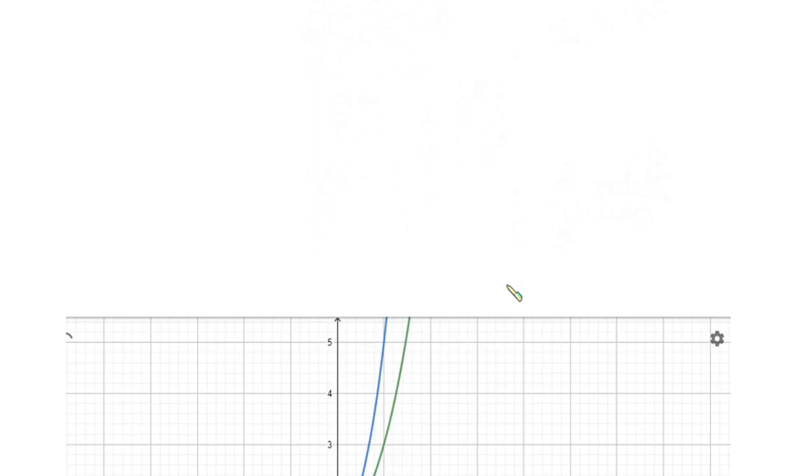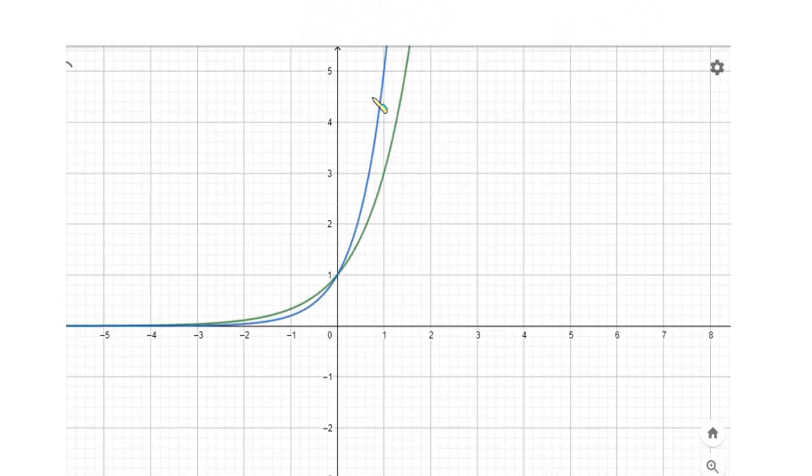And this line over here is y₁ = 5^x, and then this line is y₂ = 3^x. And you can see they intersect at the point (0, 1).